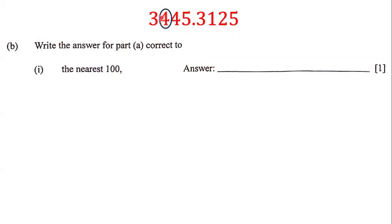With this 4 circled, we go to the right of it and we have another 4, which we underline. We ask ourselves: is 4 less than 5? Yes, 4 is less than 5, so we cannot round up. We turn the circled 4 to 0 and the tens digit to 0 as well, giving us 3,400. All the numbers behind the decimal point are eliminated, so the answer is 3,400.